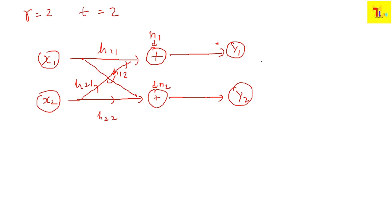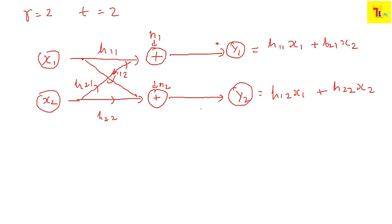We can model this mathematically: y1 = h11·x1 + h21·x2, because antenna y1 also receives the x2 component since we are transmitting in an open interface. Similarly, y2 = h12·x1 + h22·x2.